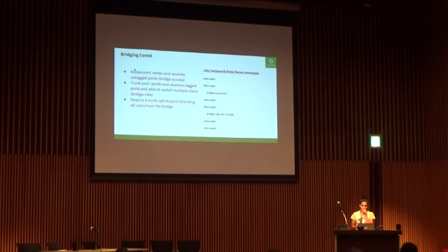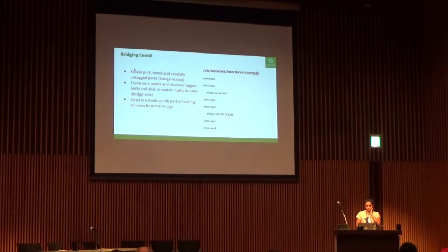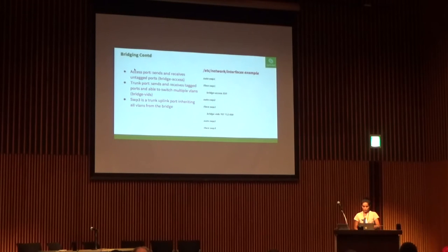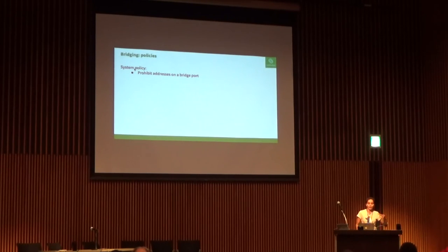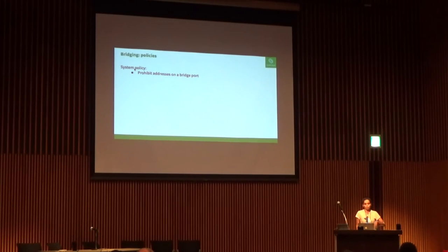We've tried to find a balance between people coming from the old networking background on routers and switches and the Linux world — for example, access ports that send and receive untagged frames. Bridging policies include prohibited addresses on a bridge port. Also, Linux allows you to enslave a VLAN device under a VLAN filtering bridge, which is not really necessary and can't be translated to hardware, so we drop in a policy to prevent such errors.